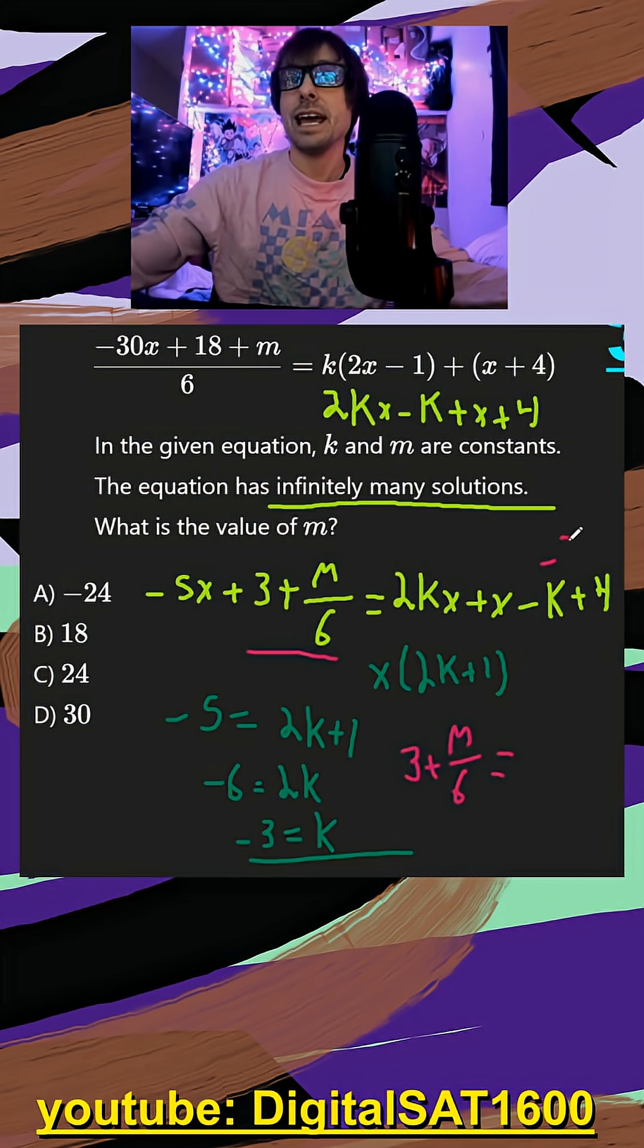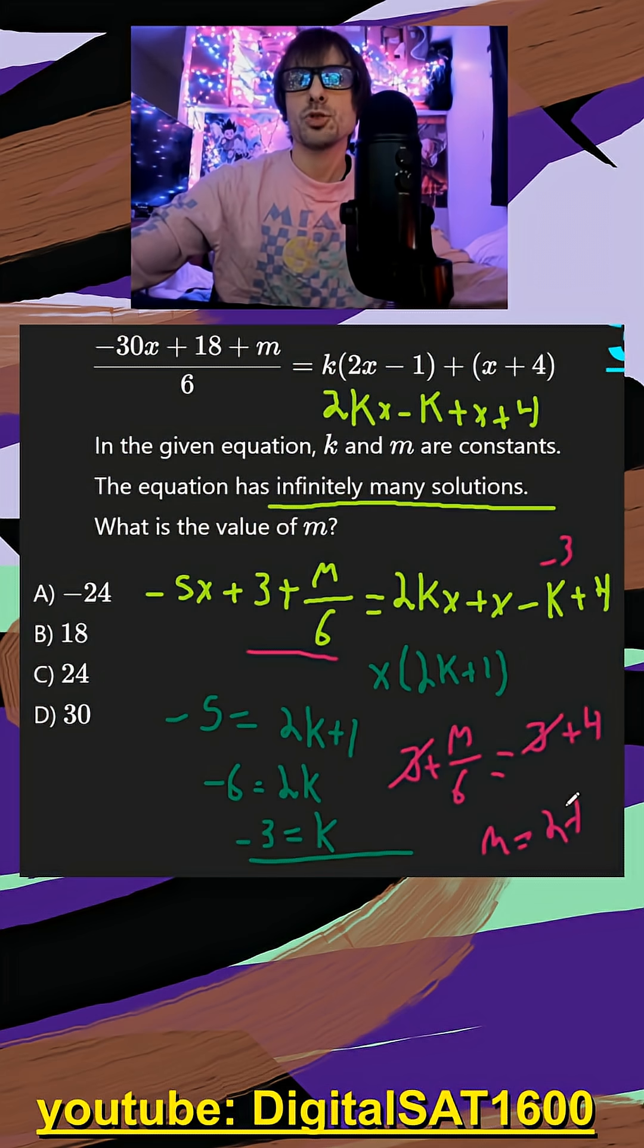Well, remember k is negative 3. So that's actually equal to 3 plus 4. Subtract 3 from both sides. And then m over 6 is equal to 4. So multiply both sides by 6, and I should get m is equal to 24, or c for our final answer.